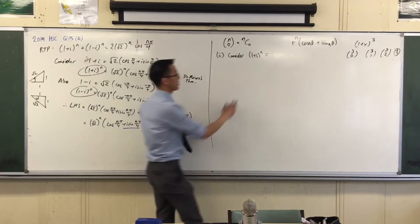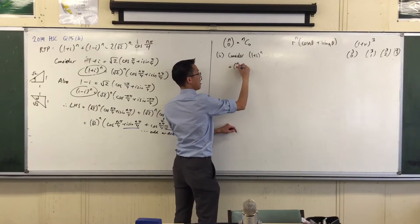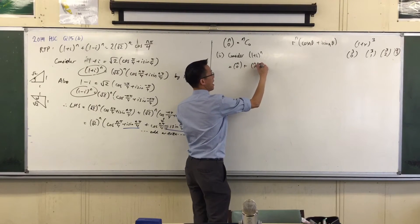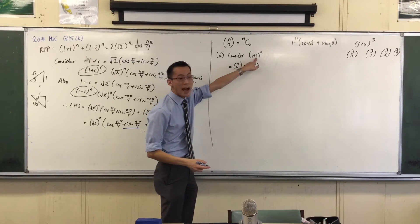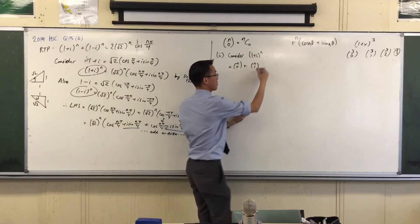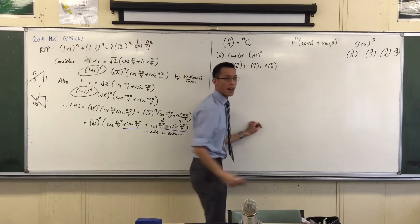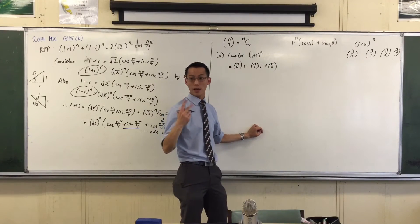So what will the very first term be? n0. Actually, I'm going to write this on the next one. n0. The next one's going to be n1. But now that I get to the next bit, an i comes along for the ride. Do you agree with that? i. And then n2, and I'm going to have two i's, i squared.